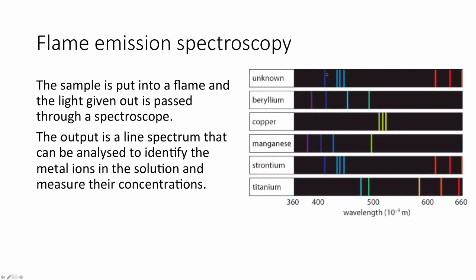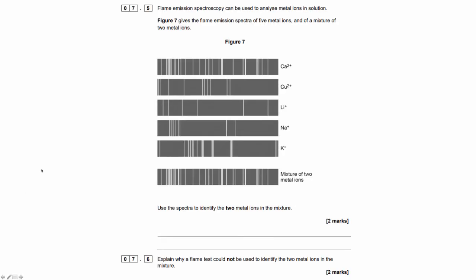So here we have an unknown. And then we match up the lines present. And we can see that we have strontium as the unknown, because the number of lines and the position of the lines are in exactly the same places. And to finish off we have another example.